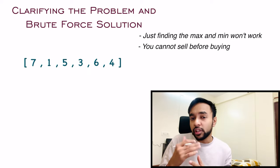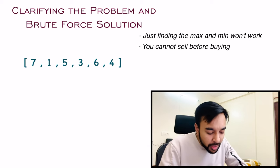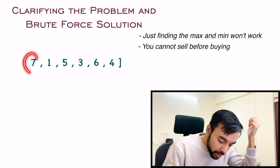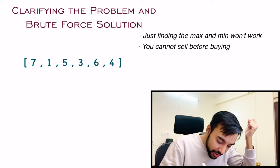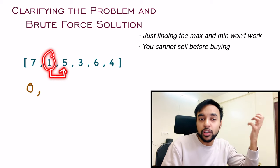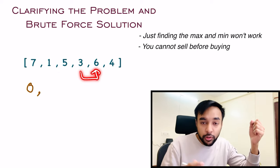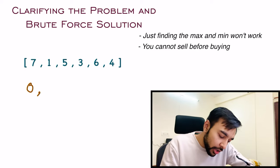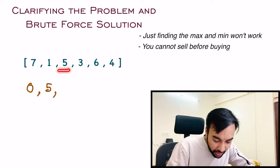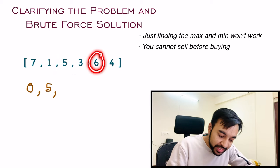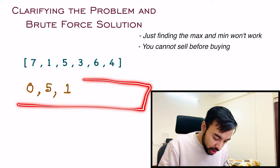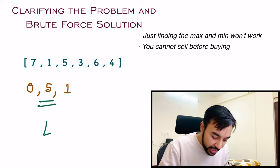So what is the brute force or most naive way to approach this problem? You start with one value and look through your entire array to determine the maximum profit. When you start with 7, you cannot find a higher value, so the profit is 0. Then starting with 1: sell at 5 gives profit 4, sell at 3 gives profit 2, sell at 6 gives profit 5. Out of all these, when starting with 1, the maximum profit is 5. Similarly, starting with 5, you can only sell at 6 for a profit of 1. At the end, you look at all results and the maximum profit possible is 5.